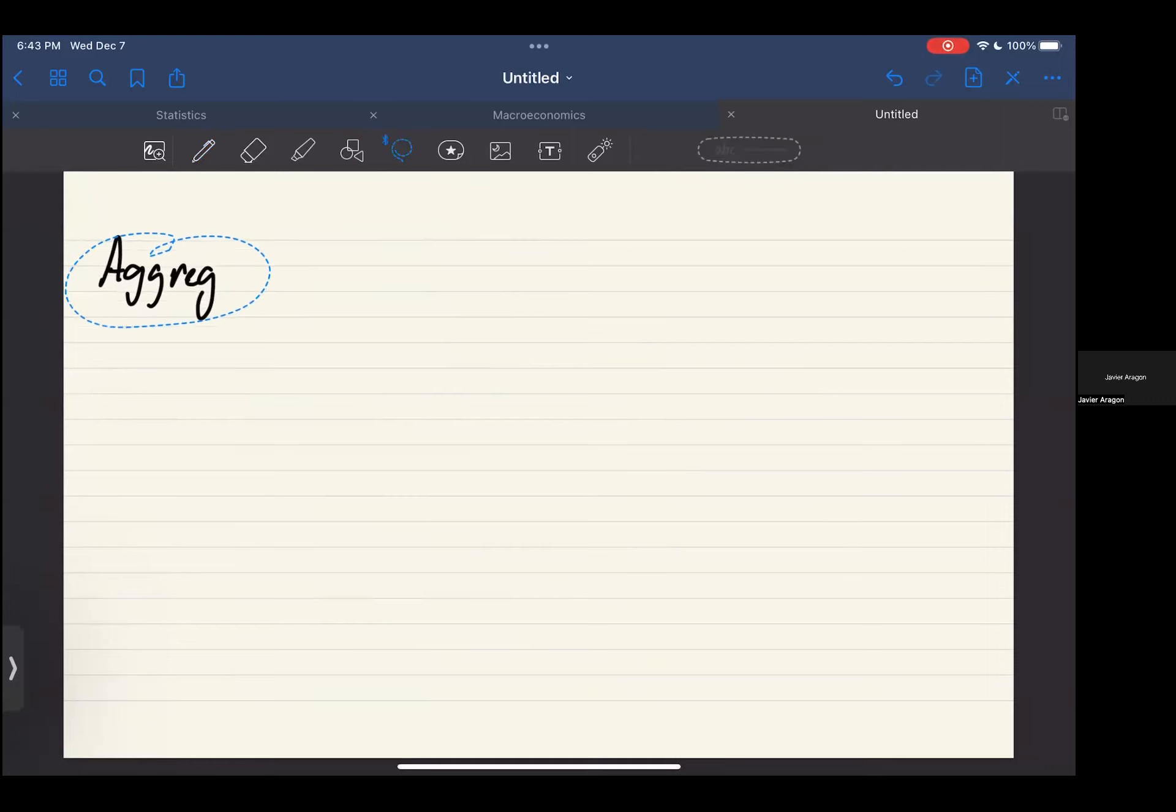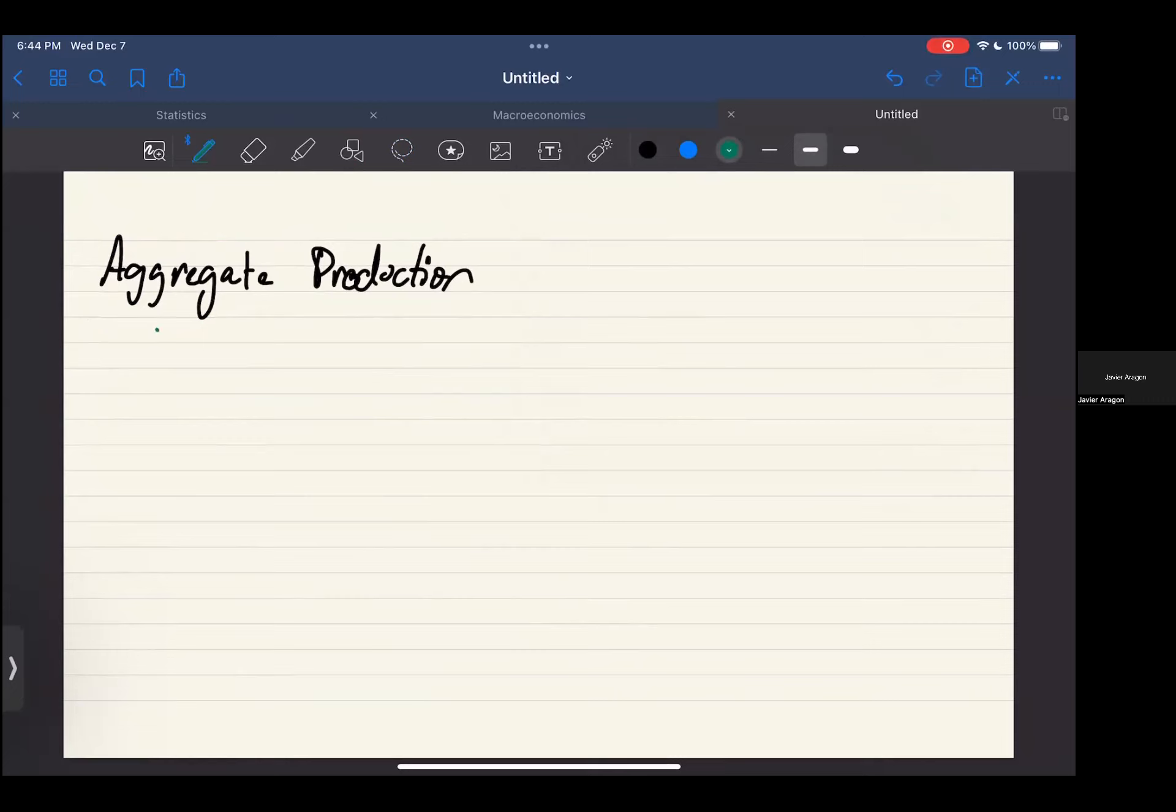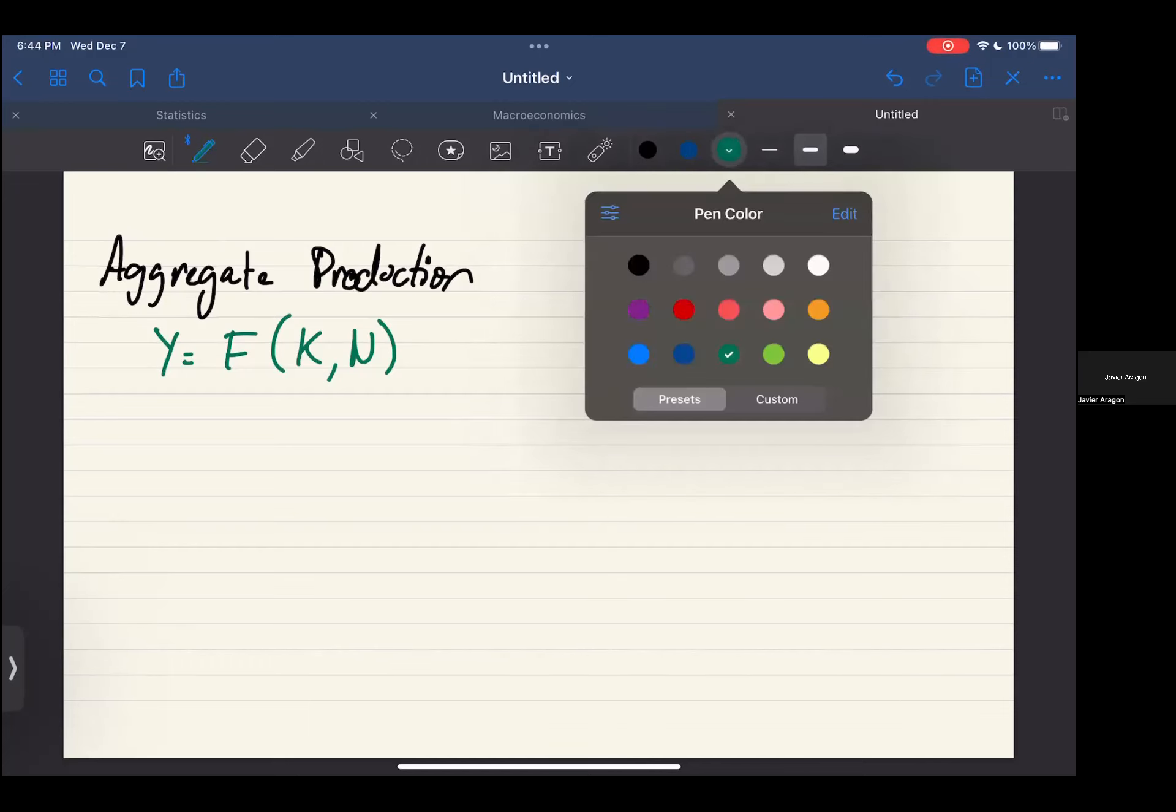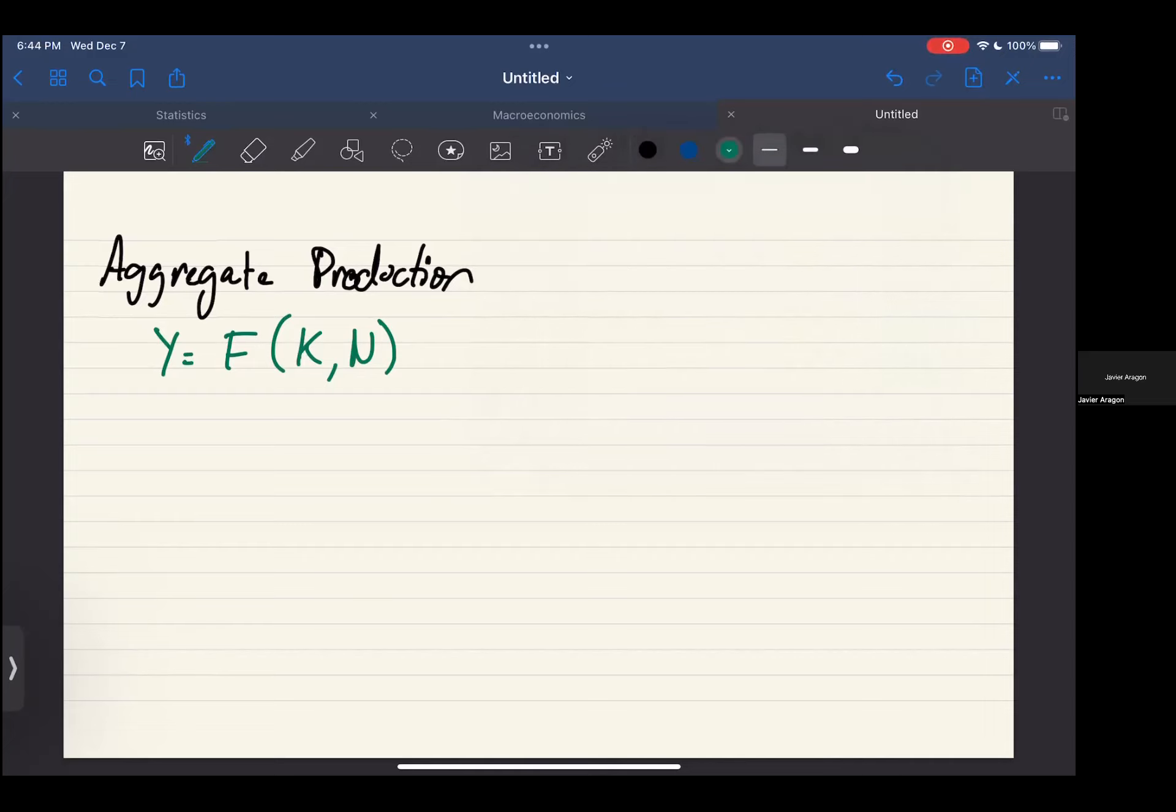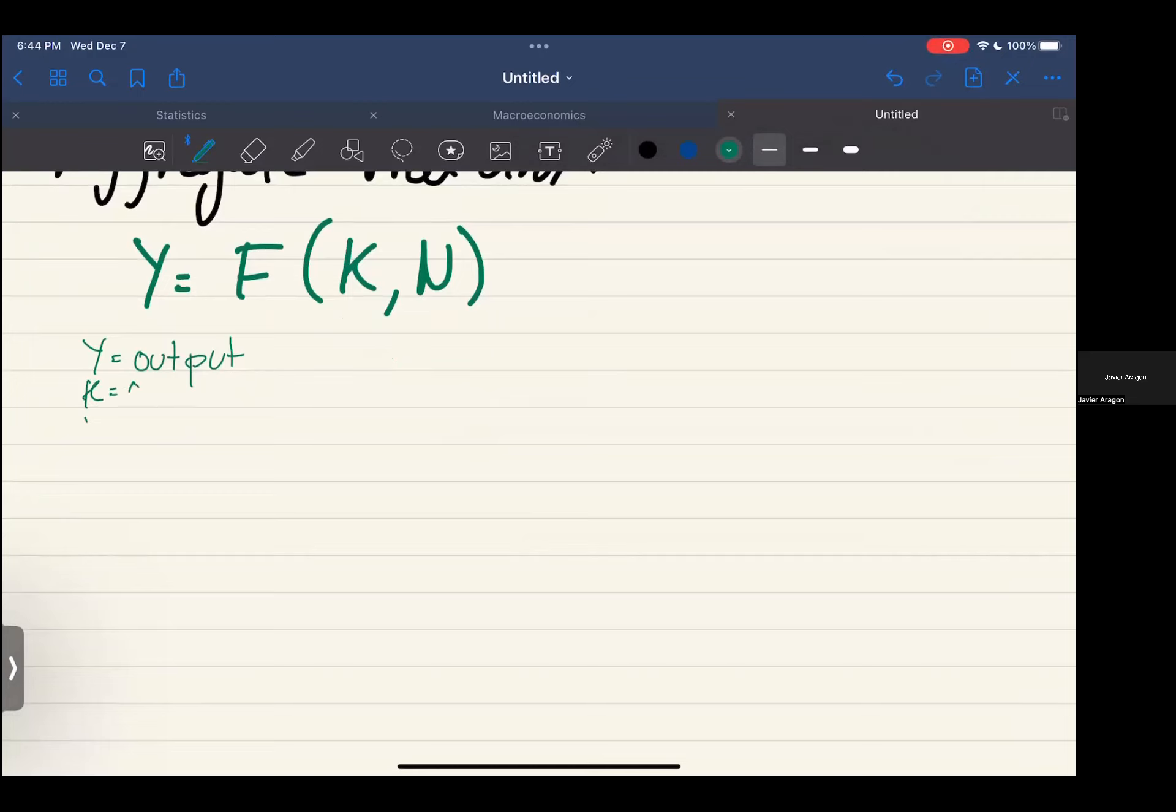So we finally get to actual formulas. The first formula is aggregate production. The formula here is Y equals F of K and N. So Y is equal to output, then K is equal to capital, and then N is labor.